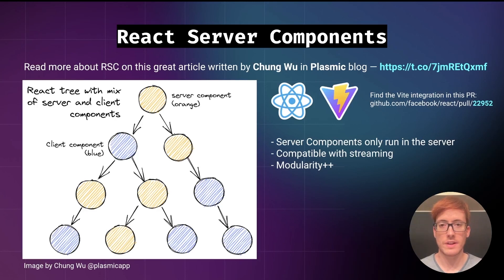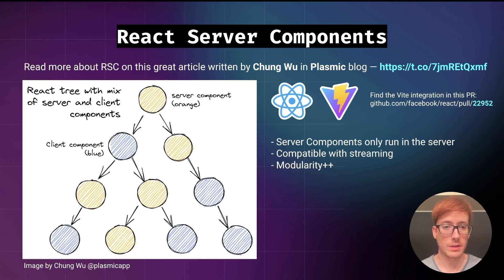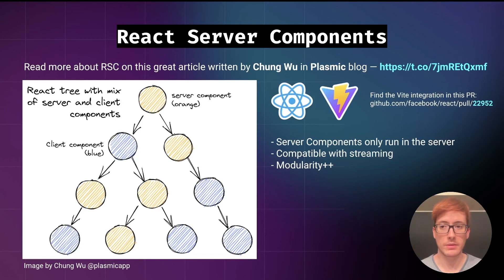Hydrogen is a framework based on React, but to be more precise, we are working with an experimental technology called React Server Components, originally implemented by Meta and more recently with contributions from companies like Vercel and Shopify itself. The original implementation required Webpack, but at Hydrogen we made an integration to bring React Server Components to Vite applications. The implementation details can be found on the pull request shown on screen. There is also a great article in the Plasmic blog with more details.